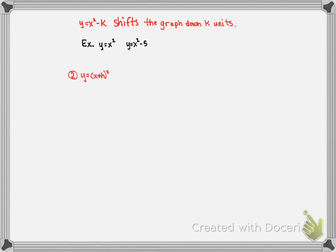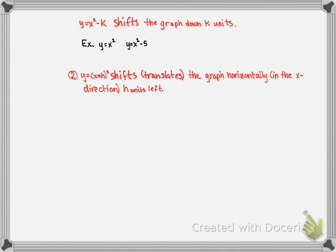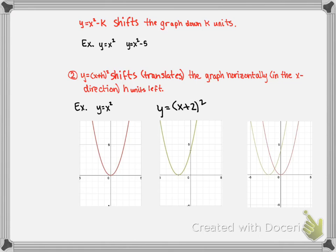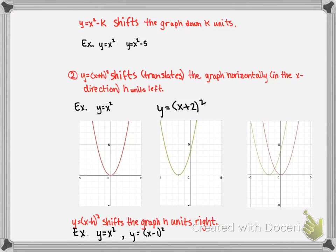Number two: y equals (x plus h) squared. This shifts or translates the graph horizontally, which is in the x direction, h units left. For example, y equals x squared is our parent function graph, and y equals (x plus 2) squared shifts the graph 2 units to the left — you can see the red graph is shifted left 2 units to form the green graph. If we had y equals (x minus h) squared, that would shift the graph h units right. So y equals (x minus 1) squared is the graph shifted to the right 1 unit.